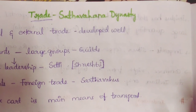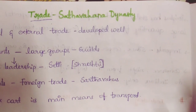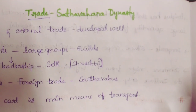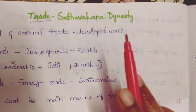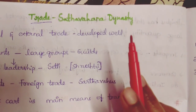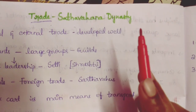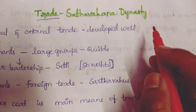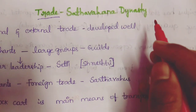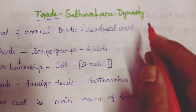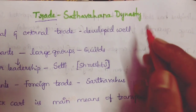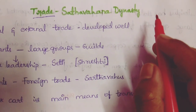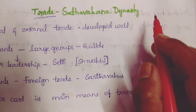Trade involves the transfer of goods and services from one person, entity, or country to another. In ancient days, it was between kingdoms. The main means of exchange is money. Trade is nothing but the export and import of goods and services.